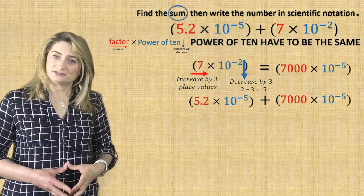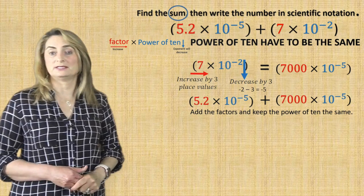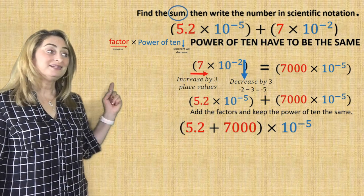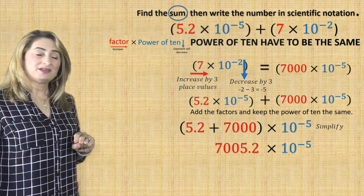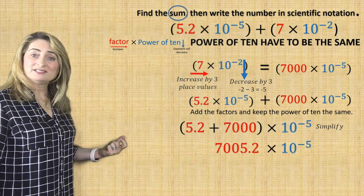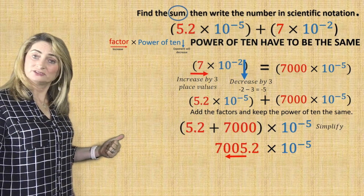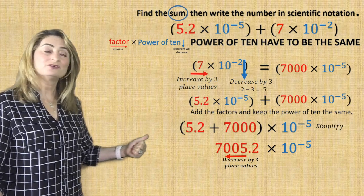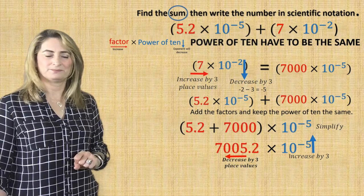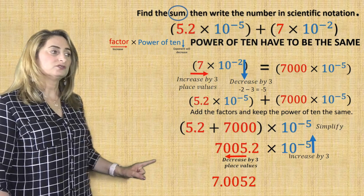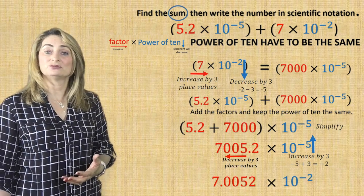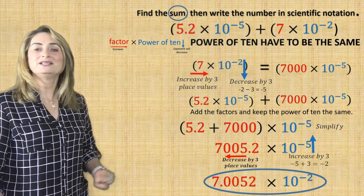The rule for adding scientific notation is to add the factors and keep the power of 10 the same. Add 5.2 plus 7,000 times 10 to the power of negative 5, keeping the power the same. Simplifying: 5.2 plus 7,000 is 7,005.2 times 10 to the power of negative 5. This is not yet in scientific notation, so I decrease the factor by 3 place values for the decimal to be right in front of the 7, meaning the power of 10 increases by 3. Moving the decimal gives 7.0052 times 10 to the power of negative 2, since negative 5 plus 3 is negative 2. This is the sum in scientific notation.